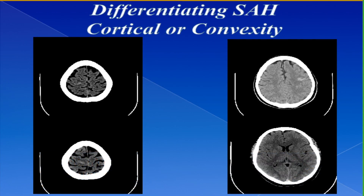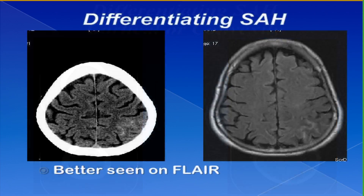Cortical and convexity subarachnoid hemorrhages are very subtle — there's just a little bit of blood, sometimes just in one sulcus, typically in the frontal lobe though sometimes more posteriorly. The bleeding amount is much less, and these are typically patterns not associated with an aneurysm. You often see them better on MRI imaging, particularly FLAIR, where you can detect the intrasulcal blood quite nicely.